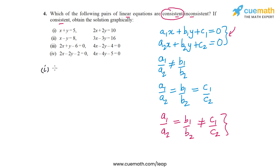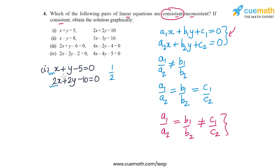The first pair is x + y = 5 (or x + y − 5 = 0) and 2x + 2y = 10 (or 2x + 2y − 10 = 0). Here a1/a2 = 1/2, b1/b2 = 1/2, and c1/c2 = −5/−10 = 1/2. All three ratios are equal, so the first pair has infinitely many solutions — it is consistent.